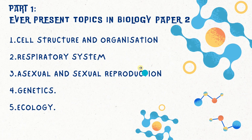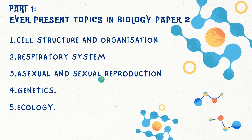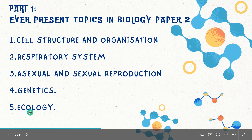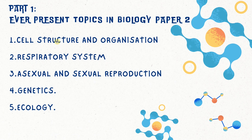Part one: ever-present topics in Biology Paper 2. These topics are: number one, cell structure and organization; respiratory system; asexual and sexual reproduction; genetics; and ecology. According to my analysis, these topics appear consistently from 2015 to 2023, so before going for an exam ensure that you prepare yourself by going through them.